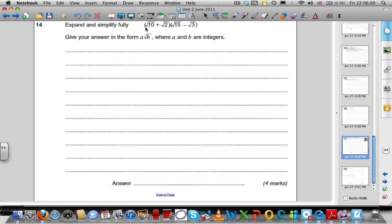The equation is multiplying out some surds and giving your answer in the form A root B, where A and B are whole numbers. Okay, really a bit like algebra here, quite an easy question.